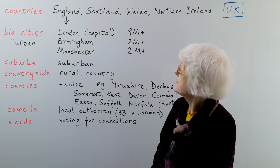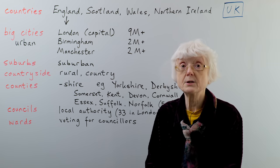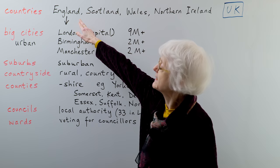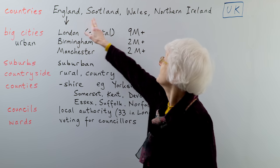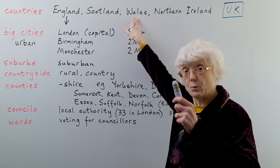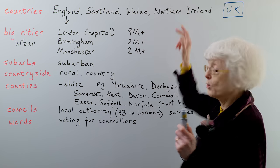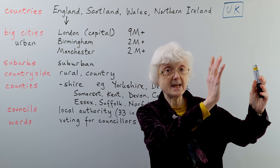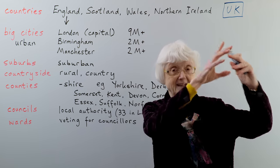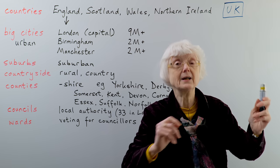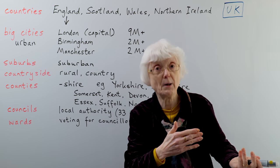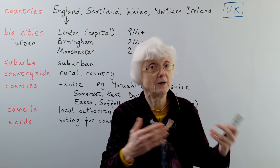The UK is made up of four separate but united countries. England, which is where I am. Scotland, which is to the north. Wales, which is to the west. And Northern Ireland, which is across the sea — it's the top part of the island of Ireland. There is a border between it and the southern part, which is the Republic of Ireland, which is independent of the UK.